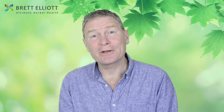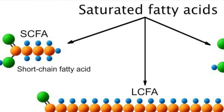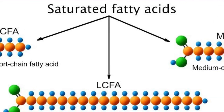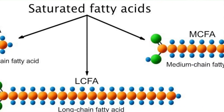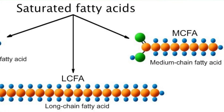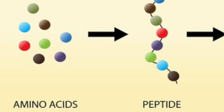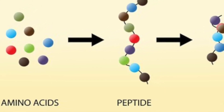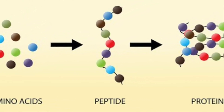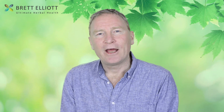Let me give a little bit of background to sugar. You might be familiar with fats and how they come in different sizes — short, medium, and long chain fatty acids. The same applies to protein: amino acids, polypeptides, and protein. Well, the same thing happens with sugar: you've got monosaccharides, disaccharides — two sugars joined together — and then polysaccharides or long chains.